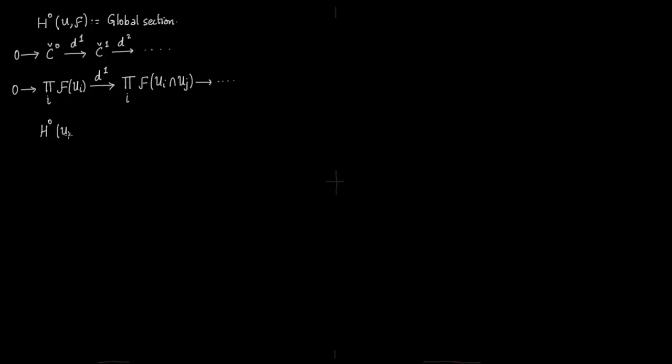So what is H0? H0 is nothing but kernel of the map D1 over image of 0, which is just 0. So kernel of D1 modulo 0 is kernel of D1. Now what are the elements which are 0 in D1? The elements which are 0 in D1 are precisely of the form Si minus Sj equals 0 on Ui intersection Uj.